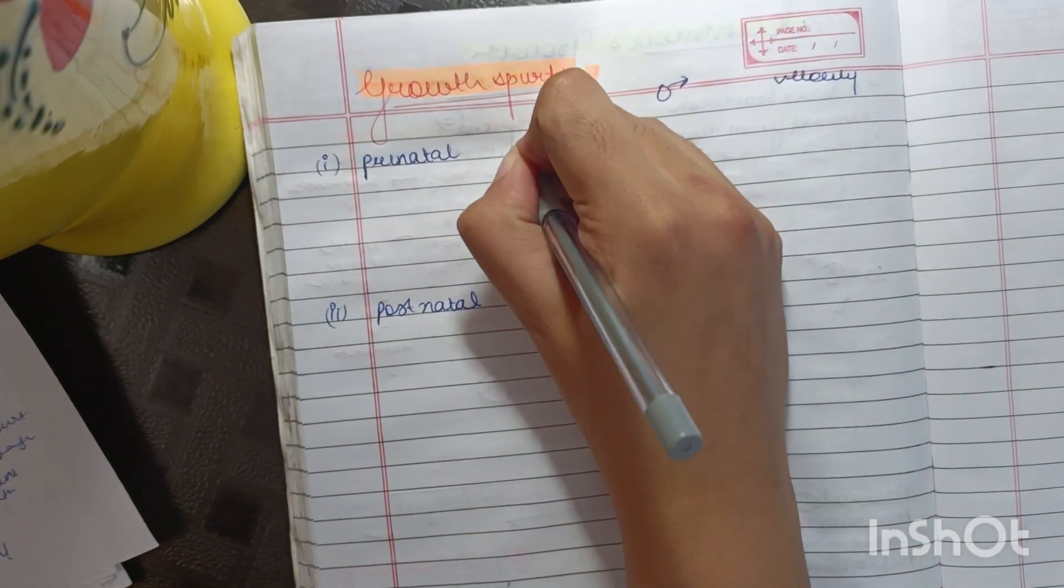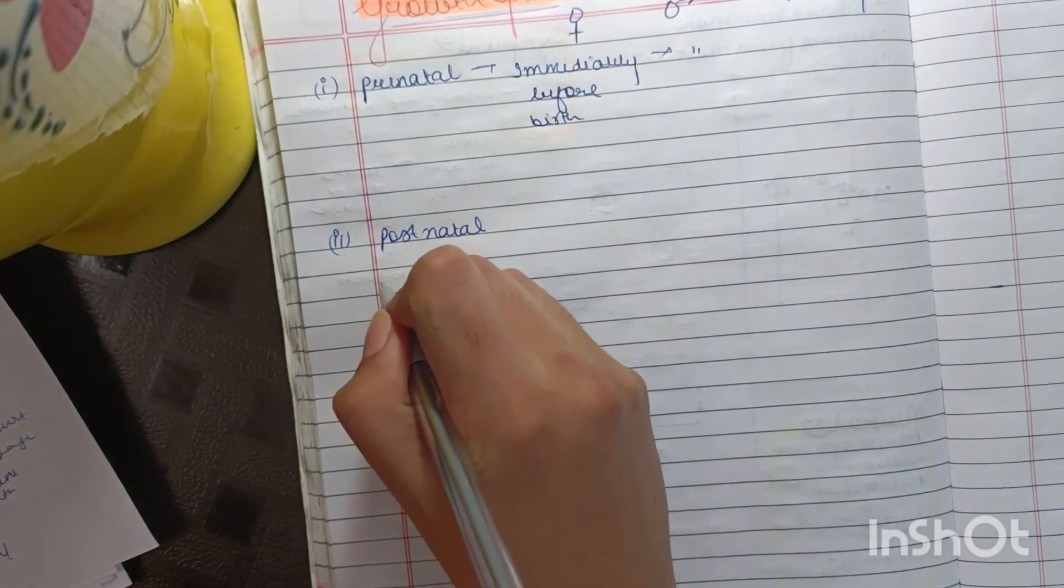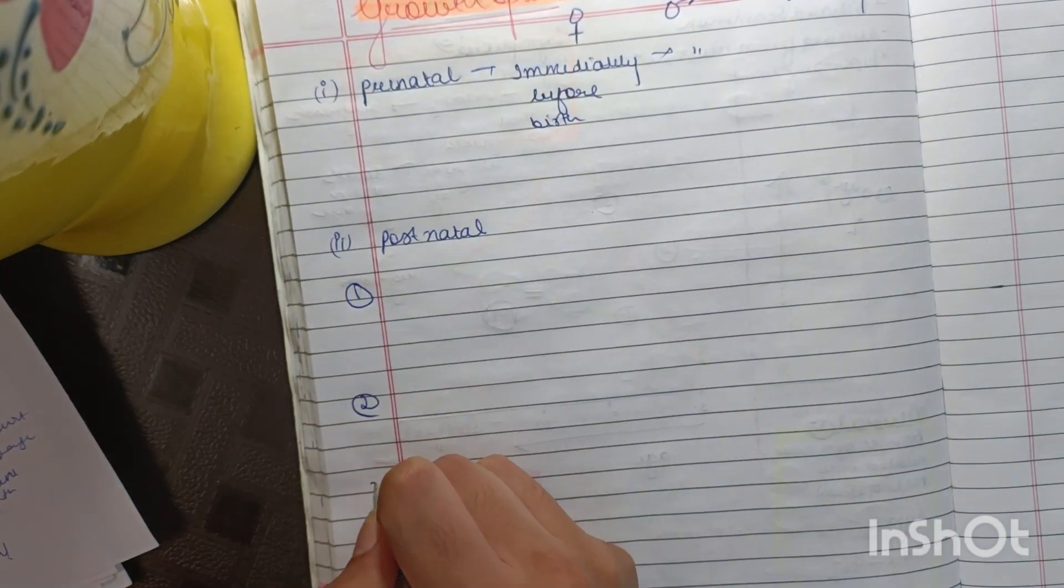Now, coming to the first one, which is prenatal. Prenatal means immediately before the birth. Now, in postnatal, you have three growth spurts.